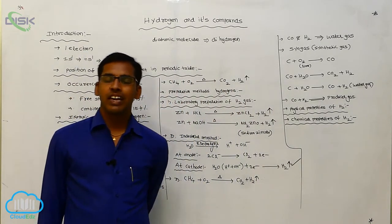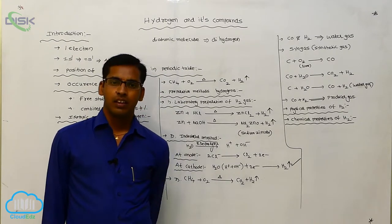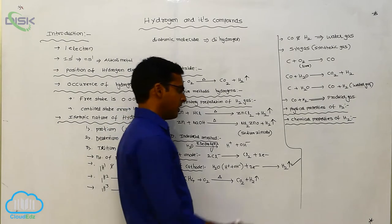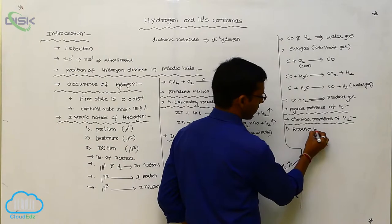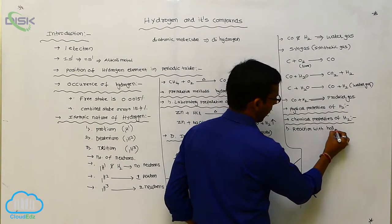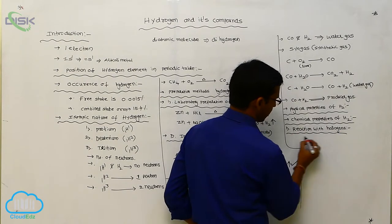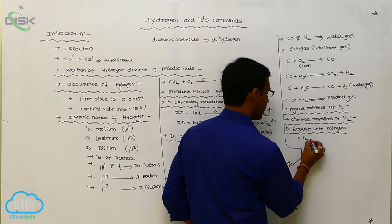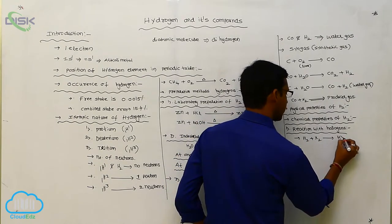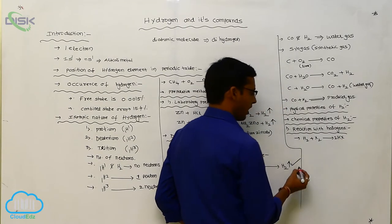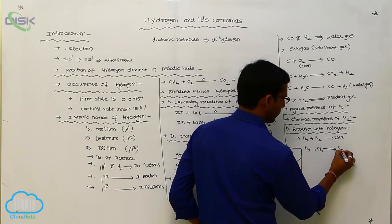Hydrogen is a very reactive element and shows various chemical properties. The first one is reaction with halogens. Hydrogen reacts with halogens to form halides. For example, hydrogen reacts with chlorine to form HCl, or hydrogen reacts with bromine to form hydrogen bromide.